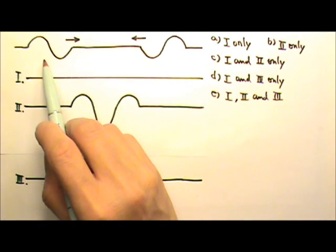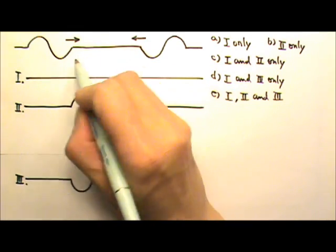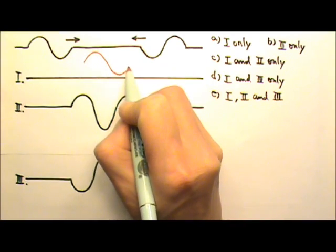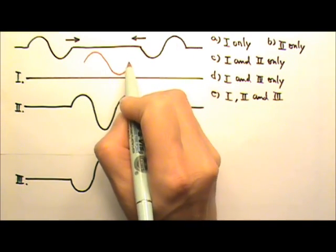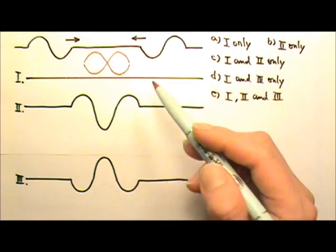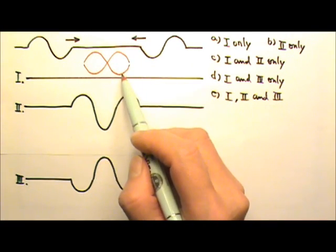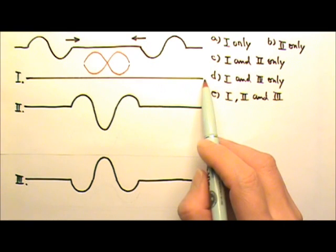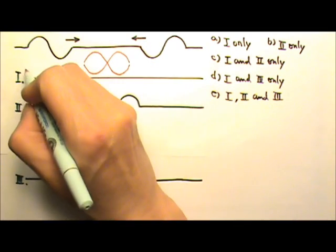When these two waves overlap completely, so when this wave gets to here and that wave gets to here, they overlap exactly and you add the displacements together using superposition principle you will get a straight line. So, one is possible.